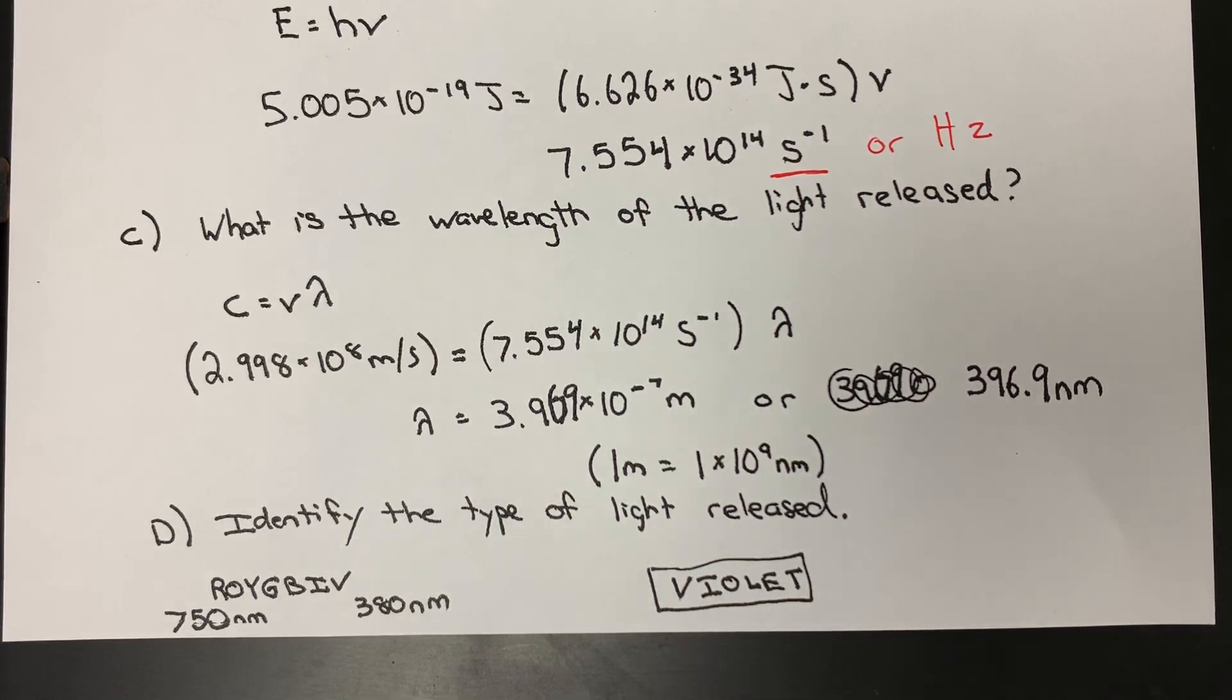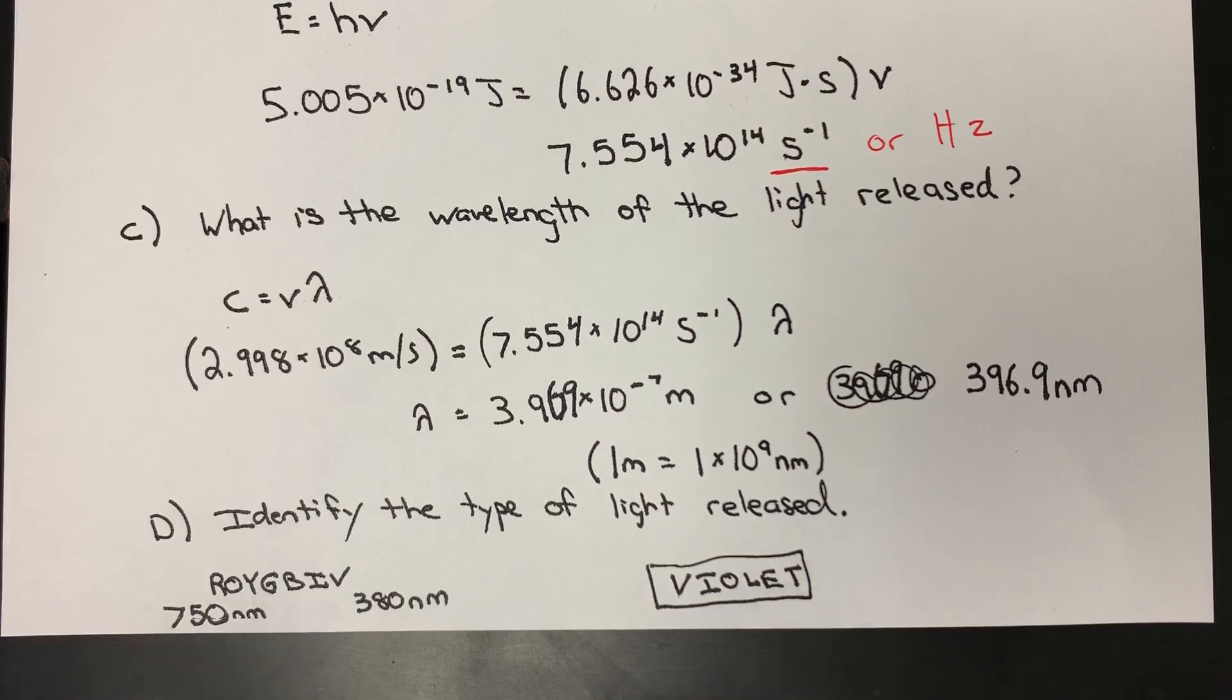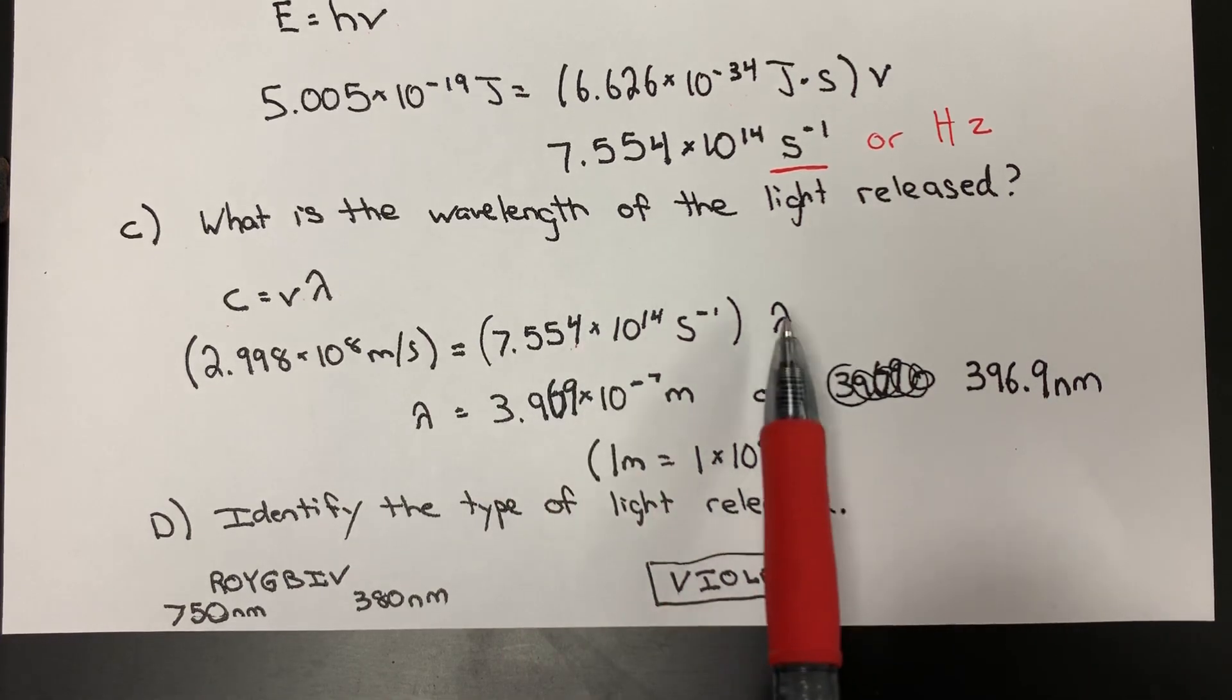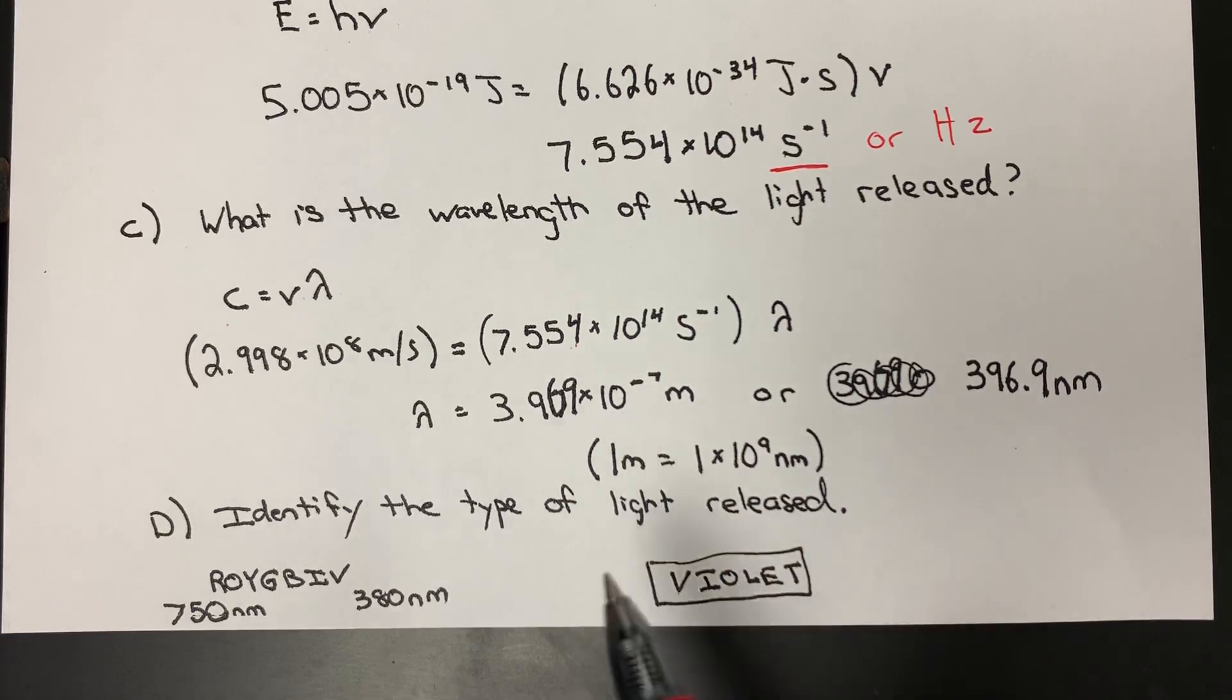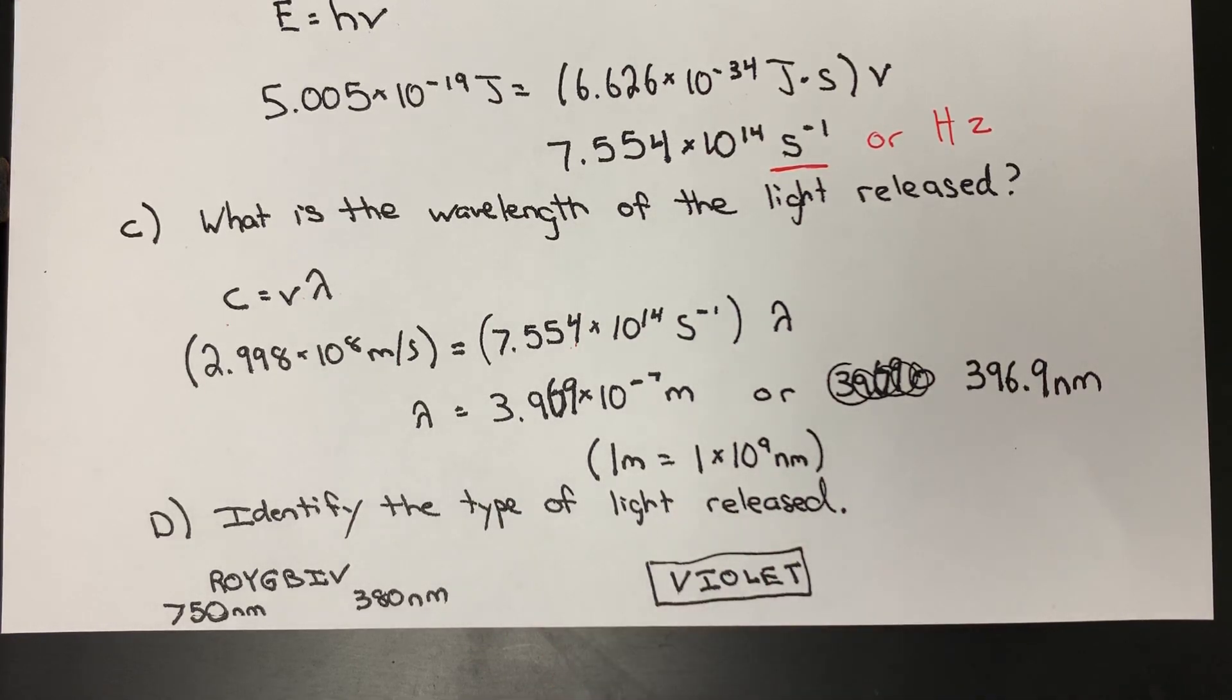We know the speed of light is equal to frequency times wavelength. We just got done solving for the frequency, so we can isolate for our wavelength. And what we find is that the wavelength is equal to 3.969×10⁻⁷ meters.